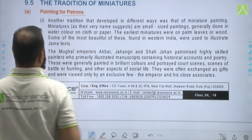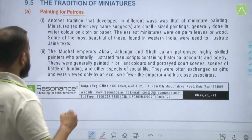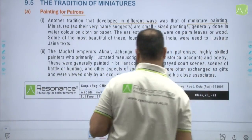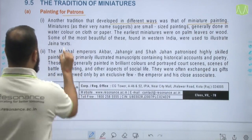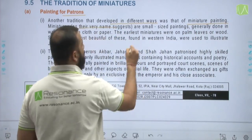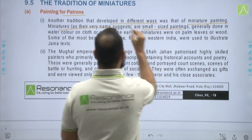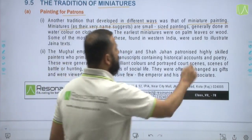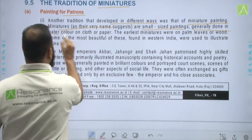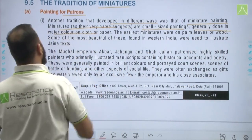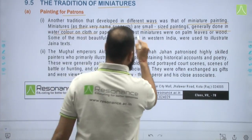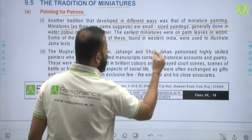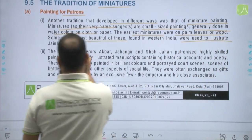A tradition that developed in different ways was that of miniature painting. Miniatures, as their very name suggests, are small-size paintings — not large — generally done in watercolour on cloth or paper. The earliest miniatures were on palm leaves or wood, and some of the most beautiful of these, found in western India, were used to illustrate Jain texts.